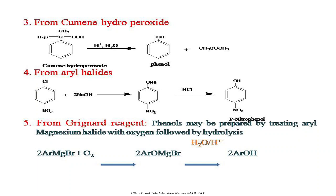The next method is from aryl halide. We can take any aryl halide — in this case, nitrochlorobenzene. This aryl halide on reaction with a base like NaOH results in the sodium salt of the halide, which on hydrolysis with any dilute acid results in phenol. In this case, we obtain para-nitrophenol because the aryl halide had a nitro group at the para position.